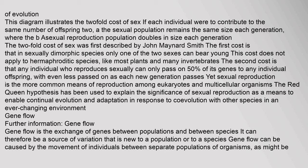The twofold cost of sex was first described by John Maynard Smith. The first cost is that in sexually dimorphic species only one of the two sexes can bear young — this cost does not apply to hermaphroditic species like most plants and many invertebrates. The second cost is that any individual who reproduces sexually can only pass on 50% of its genes to any individual offspring, with even less passed on as each new generation passes. Yet sexual reproduction is the more common means of reproduction among eukaryotes and multicellular organisms.